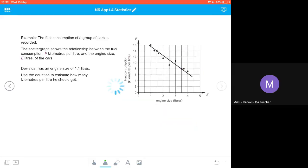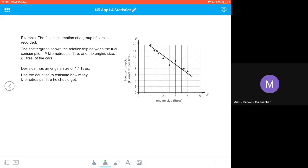We can use our equation of line of best fit to estimate at any position on the graph that isn't already plotted. We know that at 1.5 liters, fuel consumption is 14 kilometers per liter, and at 3.5 liters, fuel consumption is 8 kilometers per liter on our line of best fit.